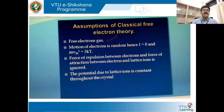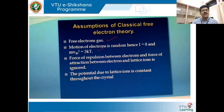The second assumption is that the motion of the electron is so random that the kinetic energy of the electron equals the kinetic energy of a gas molecule. In the absence of an electric field, the current I equals zero. The kinetic energy of an electron is ½mv², and the kinetic energy of a gas molecule is (3/2)kT. Therefore, mv² = 3kT, meaning the thermal velocity Vth is directly proportional to the square root of temperature. That is the second assumption.